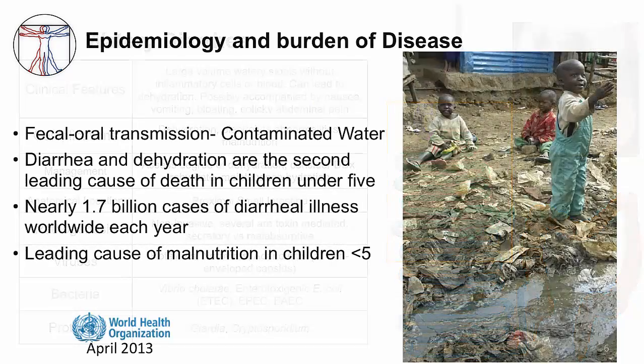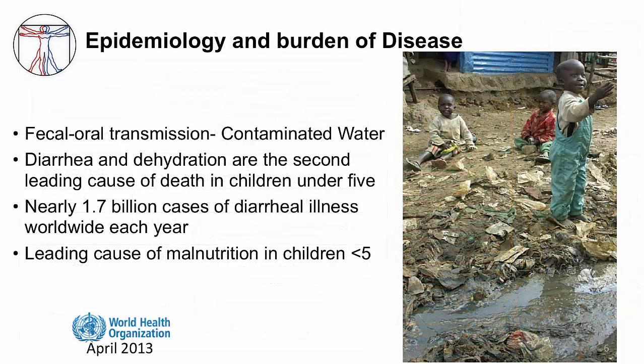Diarrheal illnesses are transmitted through fecal-oral contamination. In developing countries, the main source of infection is contaminated water because of poor infrastructure. For example, many places lack sewage systems and people are in close contact with open sewers like the one in the picture. Sewers can also contaminate drinking water sources, and bacterial pathogens in these sewers come from humans and can transmit to other humans.